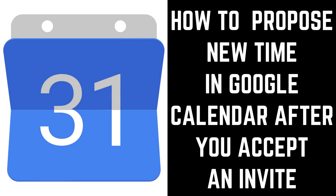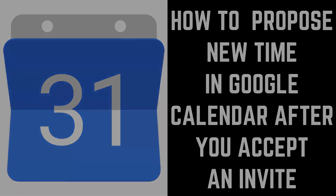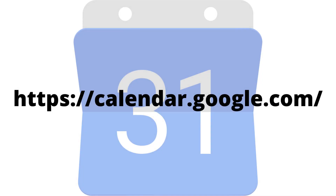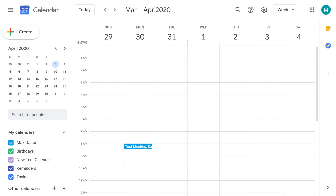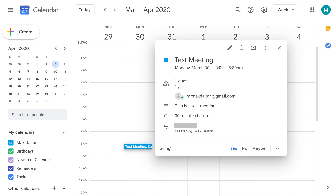Now let's walk through how to propose a new time in Google Calendar after you've accepted a meeting invite. Step 1: Launch the Google Calendar app on your iPhone, iPad, or Android device, or navigate to calendar.google.com on a web browser. You'll land on your Google Calendar home screen. Step 2: Locate the meeting you want to propose a new time for, and then click to open the details of that meeting in a dialog box.